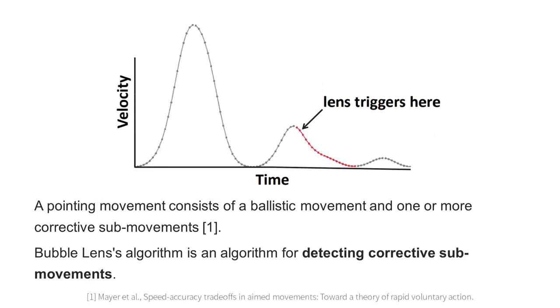A pointing movement consists of a ballistic movement and one or more corrective sub-movements. Bubble lens's algorithm is an algorithm for detecting corrective sub-movements.